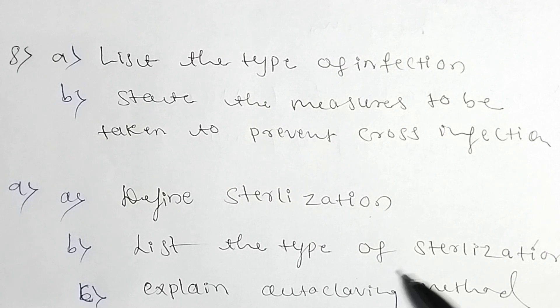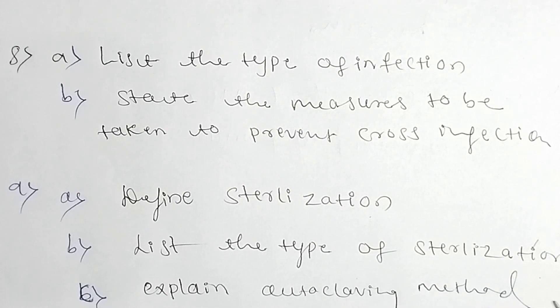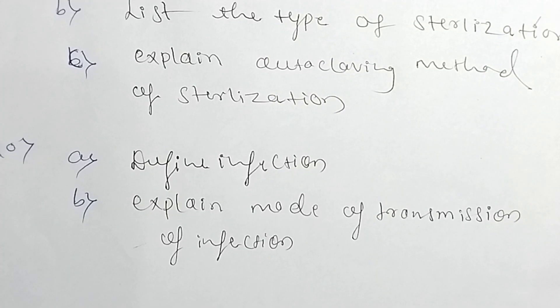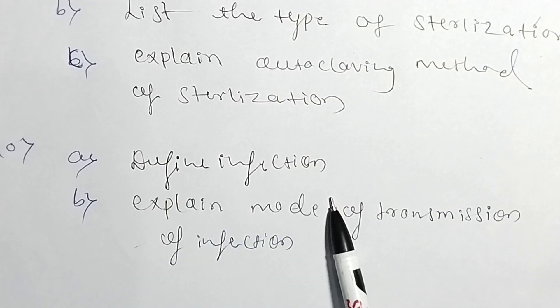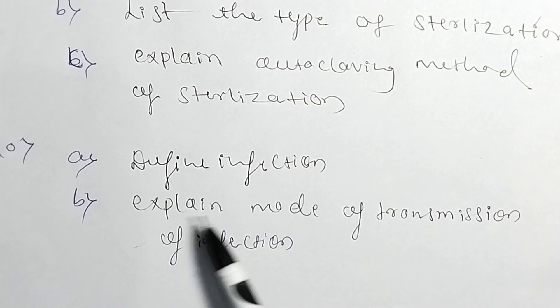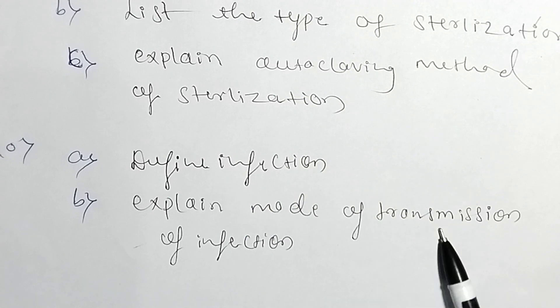Next question: define sterilization, list the types of sterilization, and C is explain the autoclaving method of sterilization. Next: define infection and explain the mode of transmission of infection.